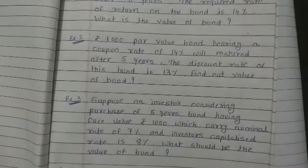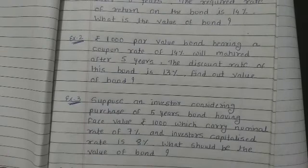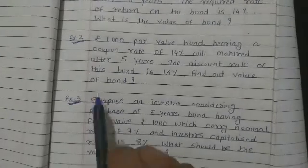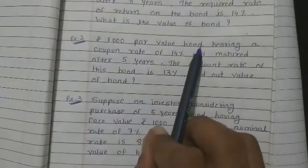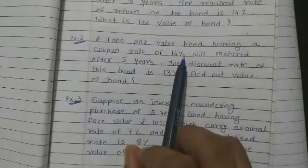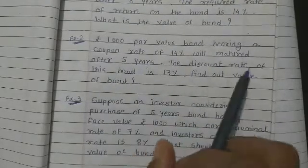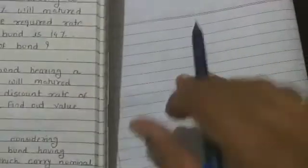Good morning students, we will continue our topic, that is calculation of the valuation of the bond. Example number two: rupees 1000 par value bond bearing a coupon rate of 14 percent will mature after five years. The discount rate of this bond is 13 percent. Find out the value of the bond.